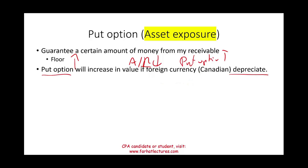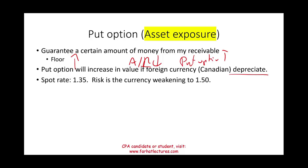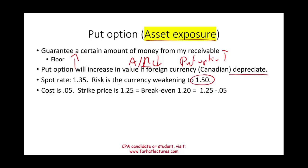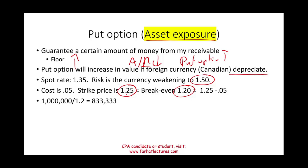The current spot rate is 1 USD = 1.35 CAD. Your risk is the currency weakening to, say, 1 USD = 1.50 CAD. You buy a put option with a strike price of 1 USD = 1.25 CAD — you can sell your Canadian dollars at that rate. You paid a 5-cent premium, so your break-even is 1 USD = 1.20 CAD. At a minimum, if you exercise the option, you'll convert at 1.25 and receive approximately $833,333 (less the premium fee of $50,000).